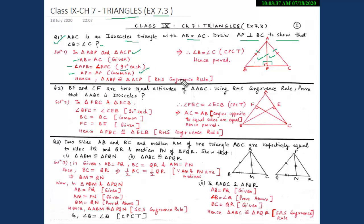From here we can say that triangle ABP is congruent to triangle ACP, and the reason is by RHS congruency criteria. Since they are congruent, then by CPCT we can say that angle B is equal to angle C. Hence proved.